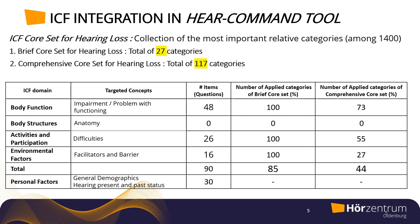Similarly, with these 48 items, we are able to cover 73% of the comprehensive categories. Overall, 90 items were designed across these domains, covering 85% of the brief and 44% of the comprehensive categories. Additionally, we have 30 items related to the personal factor domain, including general demographics and hearing present and past status.